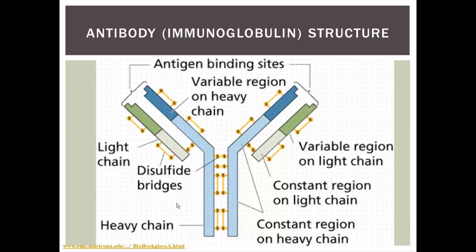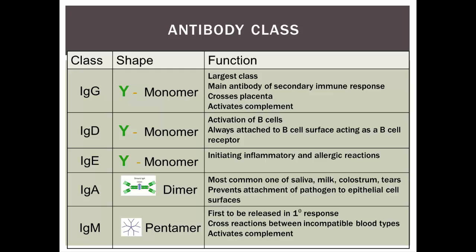The constant region is the same for any particular antibody within any class. The classes of antibodies are shown here. There are five classes: IgG, IgD, IgE, IgA, and IgM.